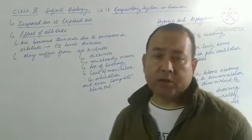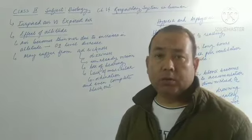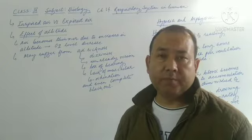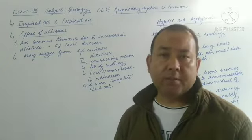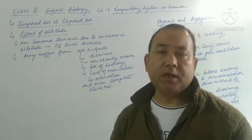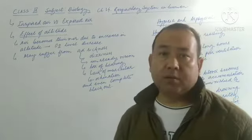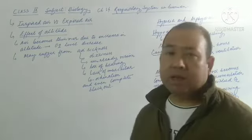Now let us move on to the next topic that is effect of altitude. So you may be knowing that as the altitude increases, the air pressure keeps on decreasing. The air becomes thinner and thinner. And at the same time, the oxygen level also decreases. So that is why what happens is that the person who goes to high altitude, they usually suffer from air sickness.